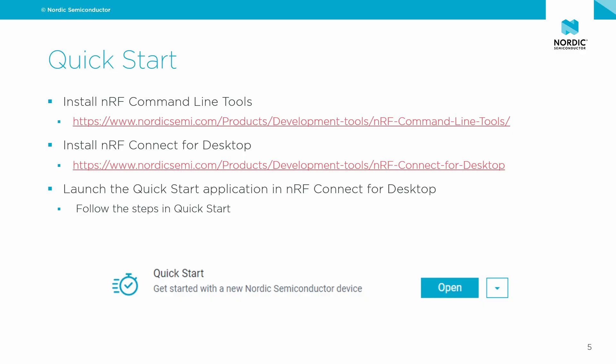Going back to the slides — first you need to install NRF command line tools, which are needed for the J-Link software. Keep in mind that on Linux and Mac OS, you need to manually trigger the installation of J-Link software bundled with the NRF command line tools; on Windows it's done automatically. Then install NRF Connect for Desktop and launch the Quick Start application available inside it. So you basically need these two things: NRF command line tools and NRF Connect for Desktop.